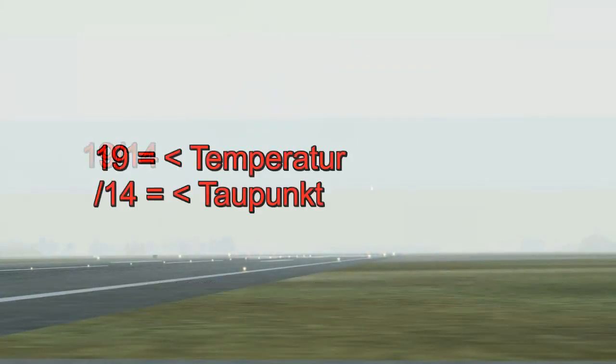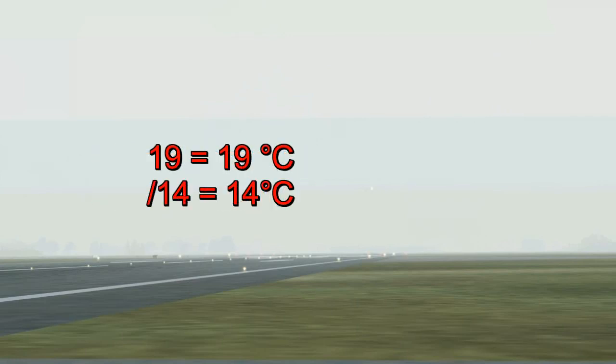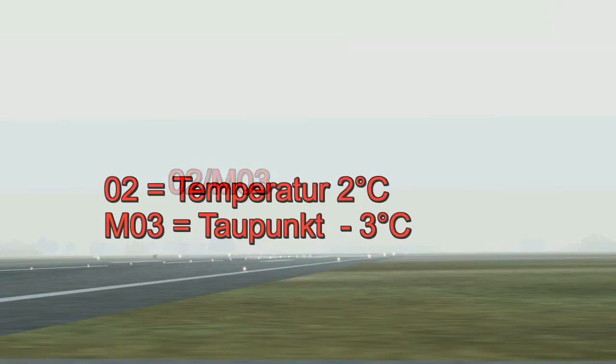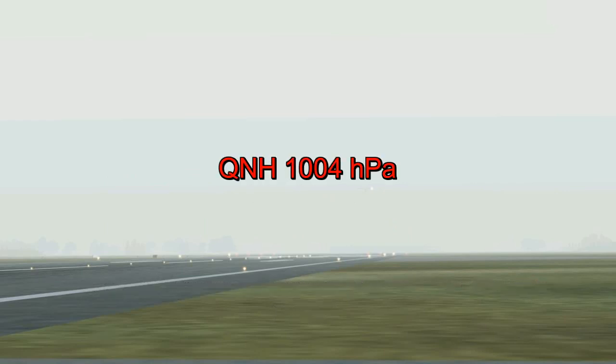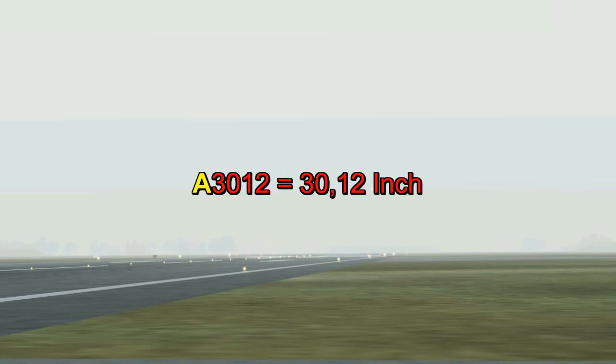Die Lufttemperatur und der Taupunkt werden zweistellig in ganzen Grad Celsius angegeben. Bei negativen Werten wird dem Wert ein M für Minus vorangestellt. Der auf Meereshöhe heruntergerechnete Luftdruck, sprich QNH, wird in Hektopascal angegeben. Erfolgt die Angabe wie in Amerika typisch in Inch, wird der Meldungsgruppe ein A vorangestellt.